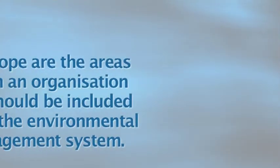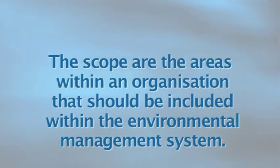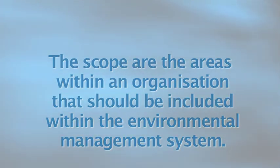Every organisation, the first thing they should do is define what scope they want to include in their environmental management system. The scope is the areas within their organisation, their activities, their products or services that they want to include in their environmental management system. It outlines the boundaries and the conditions by which the management system is going to be developed and operated.